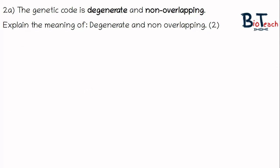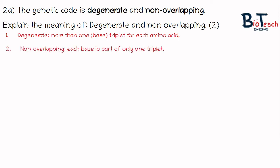The next question is 2a. This is worth two marks and asks you to explain the meaning of degenerate and non-overlapping. Degenerate means that more than one triplet can code for the same amino acid, and non-overlapping means that each base is only part of one triplet.